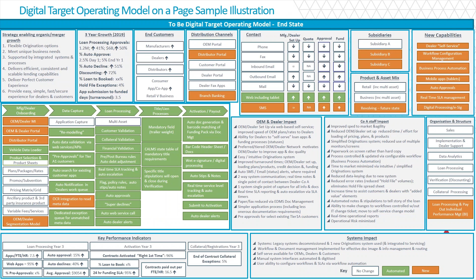How does that all come together? It comes together in what we would call an operating model on a page. Within this model, it talks about the desires for future state distribution channels, what we want to do within customers, quantitative analysis around increases in auto approvals and declines, loan-to-book values, and so on. And it presents the key levers that can be used and how the future operating model will impact the dealer, the manufacturer, the customer, and potentially staff. There's a fair amount to cover here, but we'll leave this with you for reflection after this demonstration.